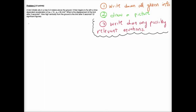Alright, here's our problem. A bird initially sits in a tree five meters above the ground. It then begins to fly with a time-dependent acceleration of ax equals 10 and ay equals 3t meters per second squared. What is the displacement of the bird after two seconds? How high vertically from the ground is the bird after two seconds?